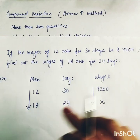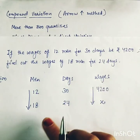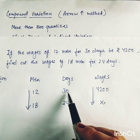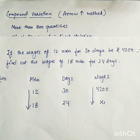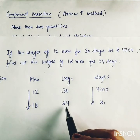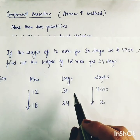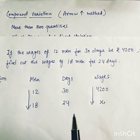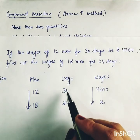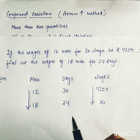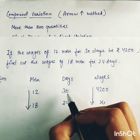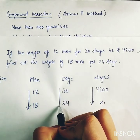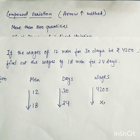Next, we compare days and wages. 30 days' wages is 4200, so 24 days will earn less than 4200. So whatever digit is less, that will be our arrow pointer. Between 30 and 24, 24 is the lesser digit, so 24 will be our arrow pointer.